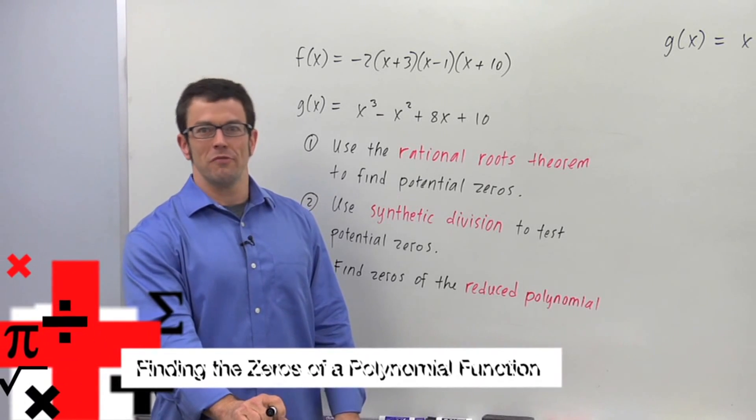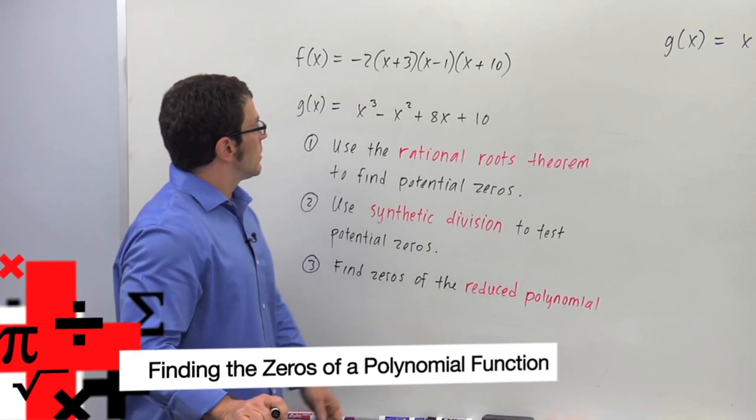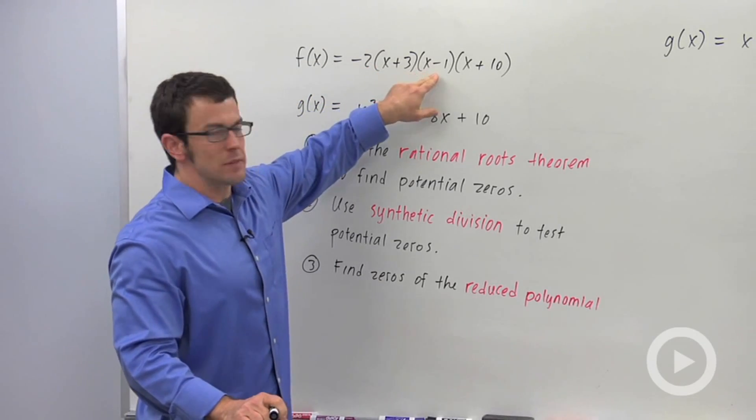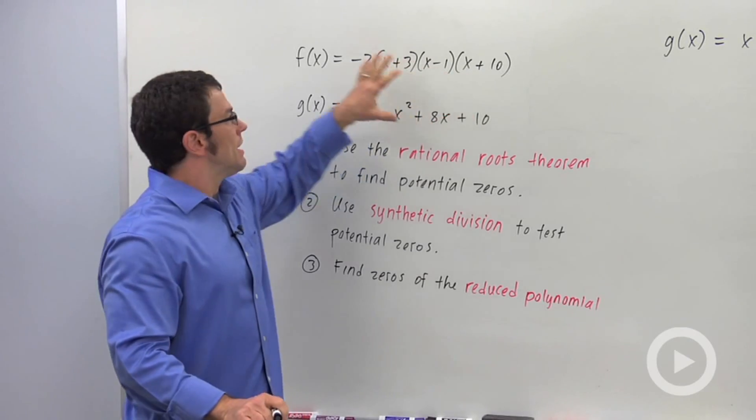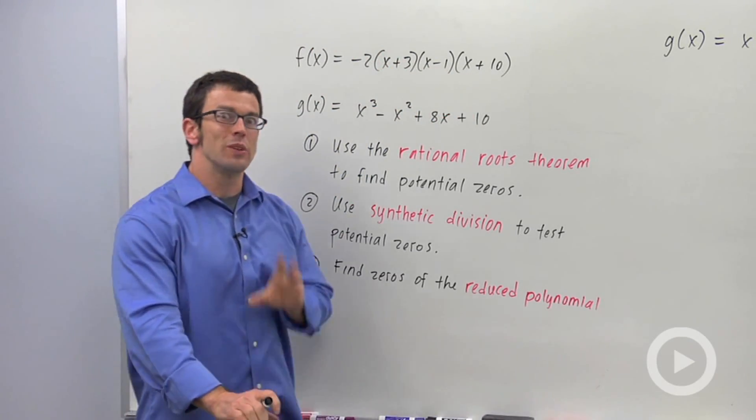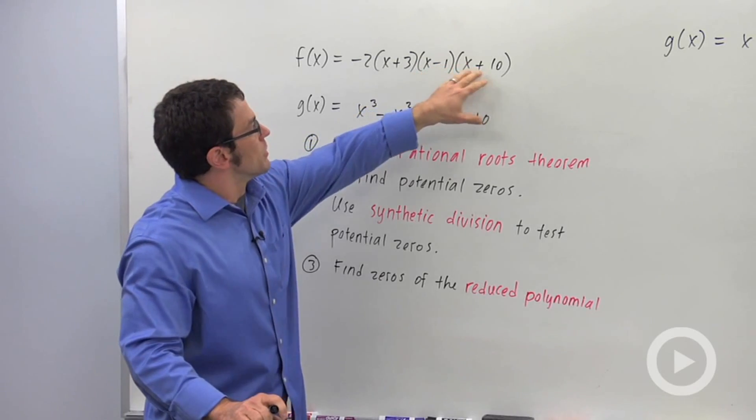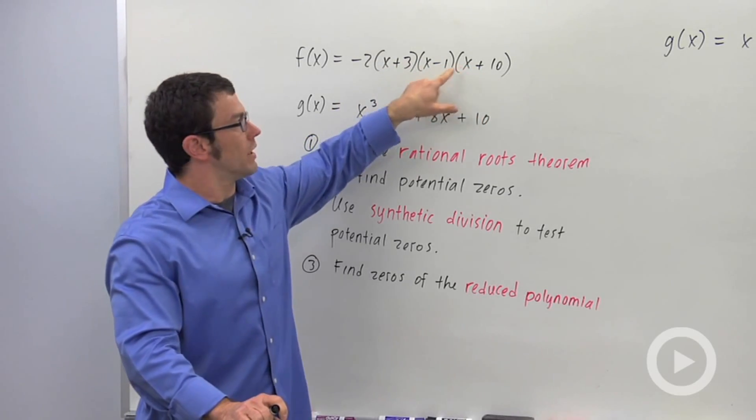We're finding the zeros of polynomial functions. Let me show you two examples. f of x equals negative 2 times x plus 3, x minus 1, x plus 10. If you're given a polynomial like this, it's really easy to find the zeros of the function, because each of these factors contributes a zero. So you'll have negative 3, 1, and negative 10.